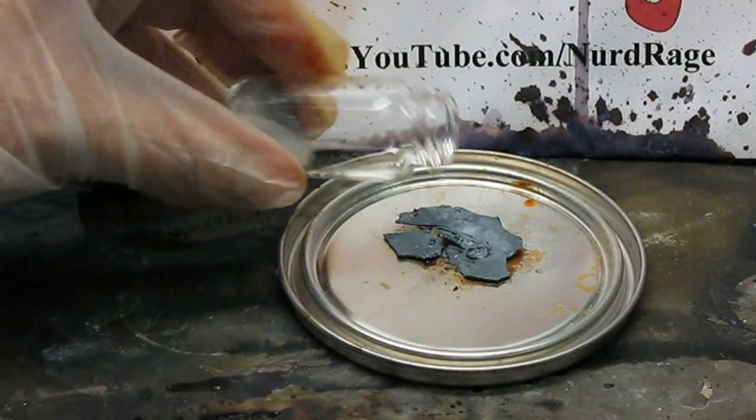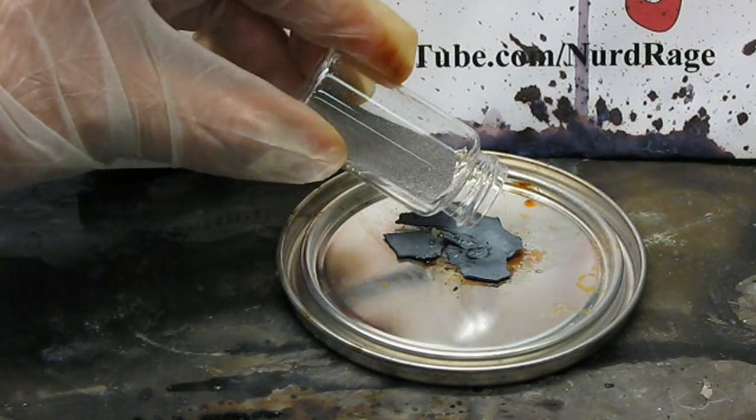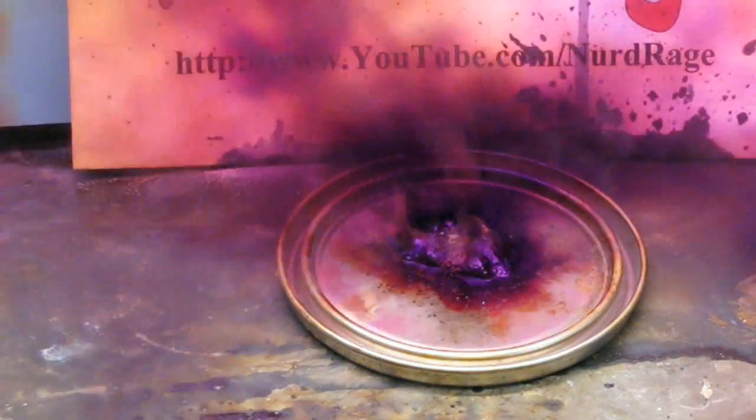A cool demonstration with iodine is to place some on a tray and then pour over it a small amount of magnesium powder. A large cloud of purple iodine vapor is formed in the reaction.